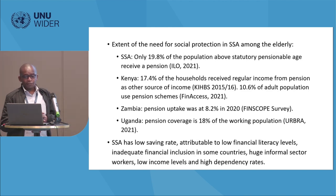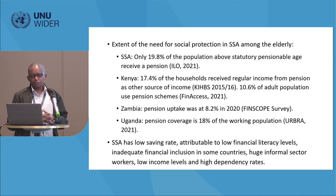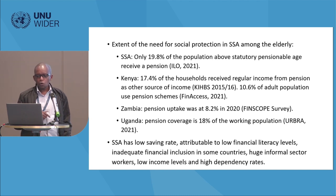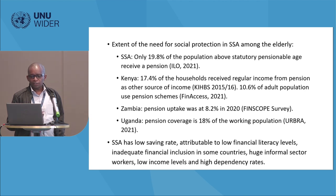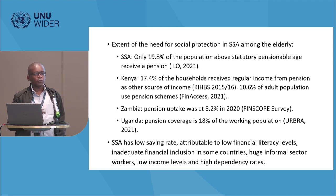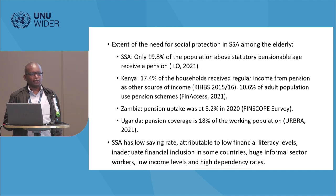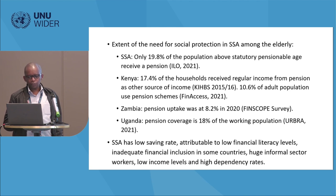Looking at the extent of social protection in sub-Saharan Africa: less than 20% of the population above pensionable age receive a pension. In Kenya, about 70% get regular income from pension according to the Kenya Integrated Household Budget Survey, but from the FinAccess Survey 2021, only about 11% of the older population use pension schemes. For Zambia, the uptake ratio is about 8.2%, and for Uganda it's about 18% of the working population. If this gap can be addressed, there's also a way of mobilizing resources for development.